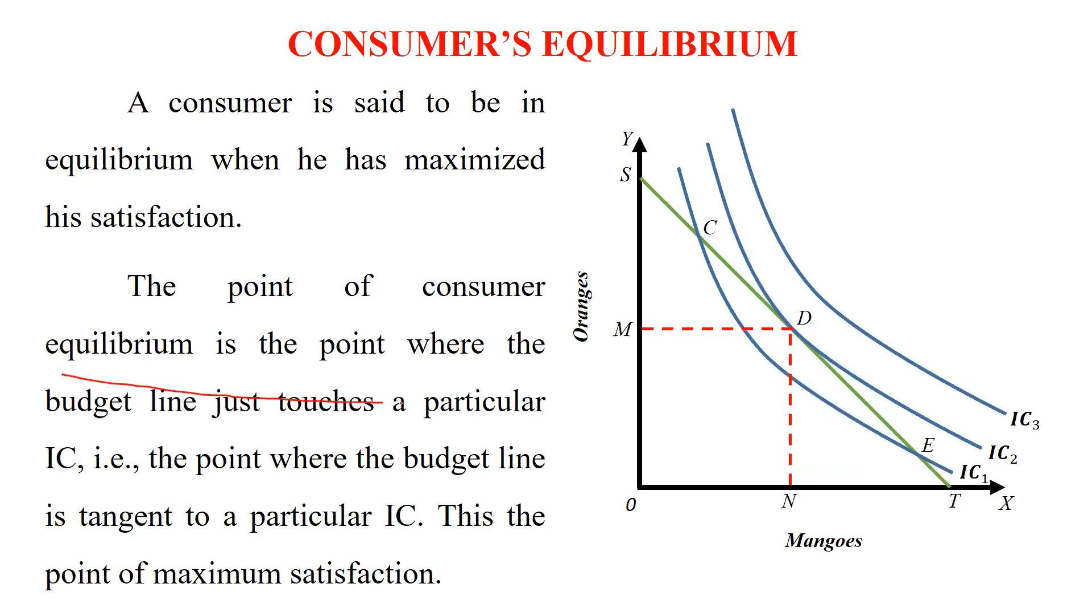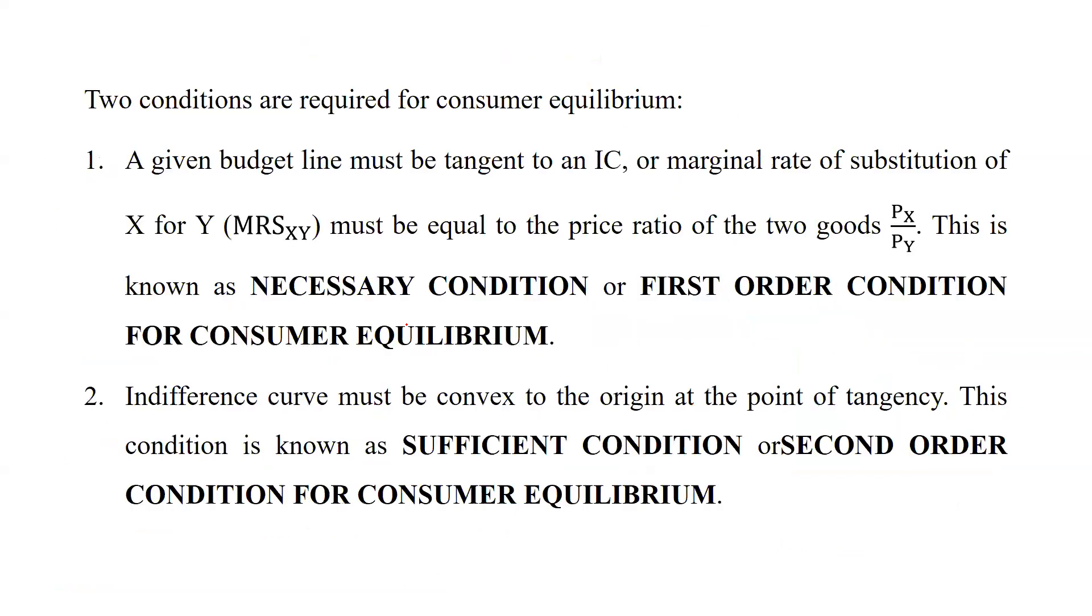The point of consumer equilibrium is the point where the budget line just touches a particular IC. IC means indifference curve. You can see here this is the indifference curve and the point where the budget line is tangent to a particular IC, this is the point of maximum satisfaction. That means the person is satisfied when purchasing these number of oranges and these number of mangoes. That is reflecting consumer equilibrium.